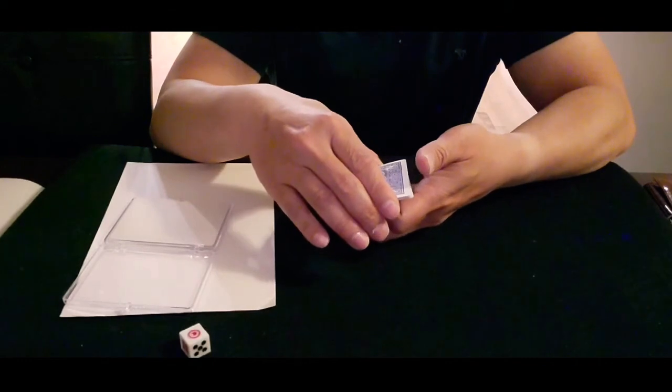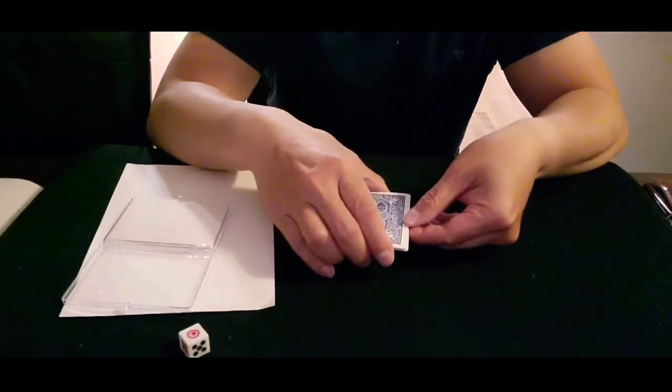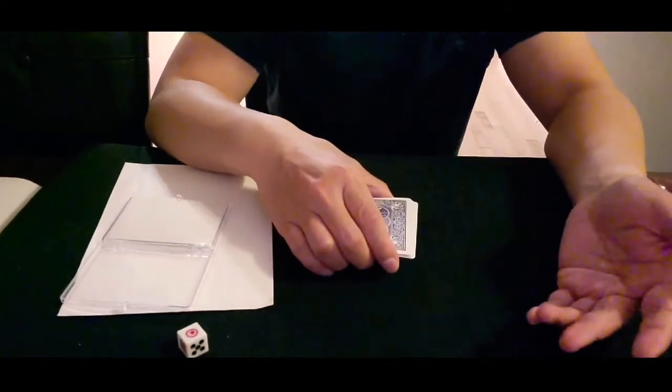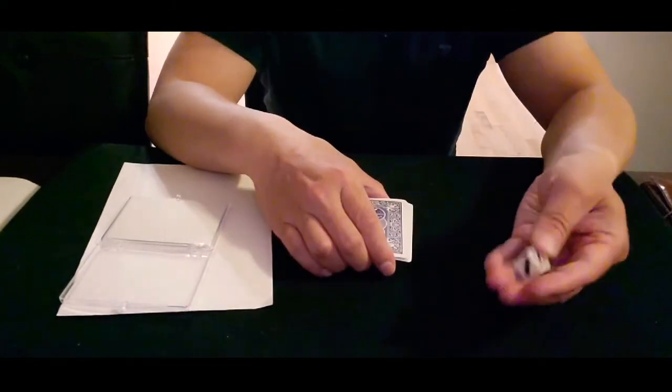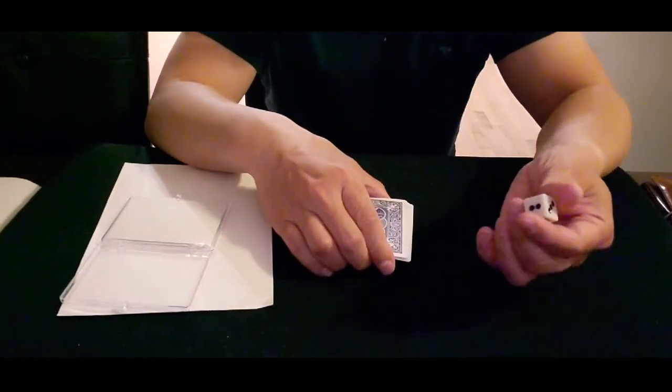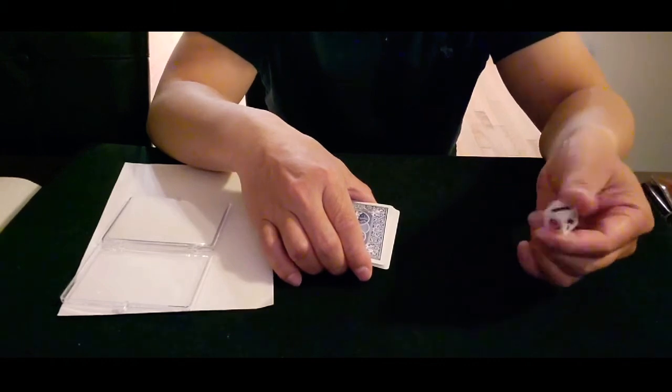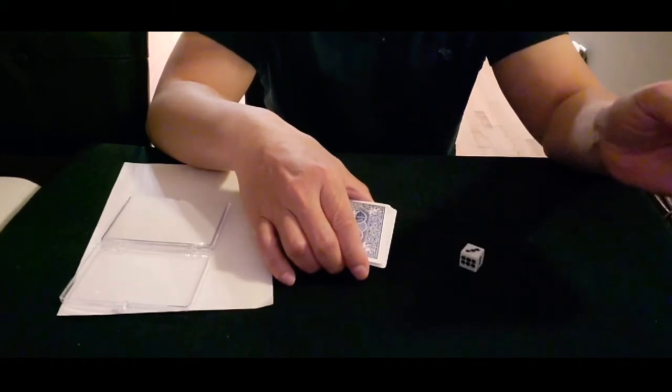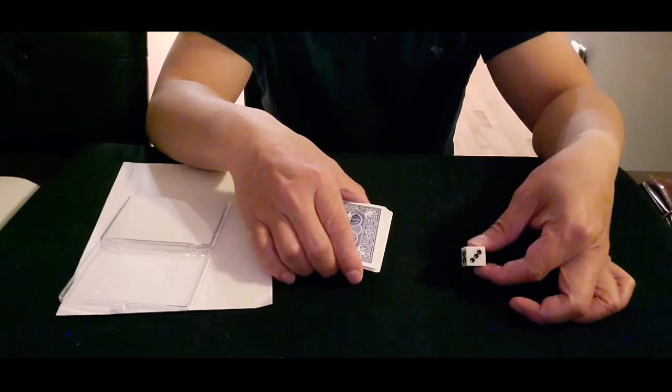I'm going to ask an audience to pick a card, but I don't have an audience here. So I just use the dice to roll a number and then I will deal the card from the number. Whatever number that we have. Okay, three.